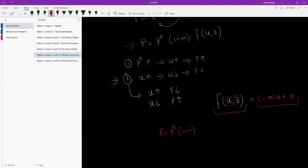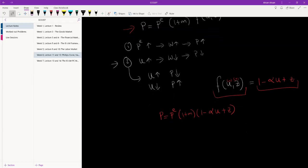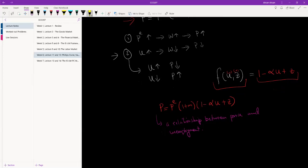If we use that, this equation becomes P equals P^e times 1 plus m times 1 minus lambda u plus z. I'm not telling you guys what the lambda is. Try to figure that out on your own. I'm sure you guys will be able to do this. Now this is a relationship about price and unemployment, a relationship between price and unemployment. That is highlighted by this. We have price here and we have unemployment here, and there is a negative relationship between them.